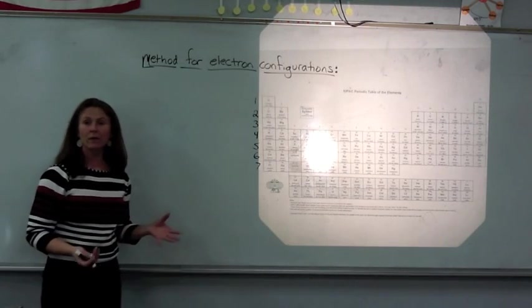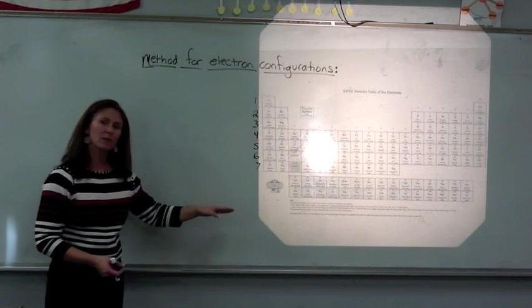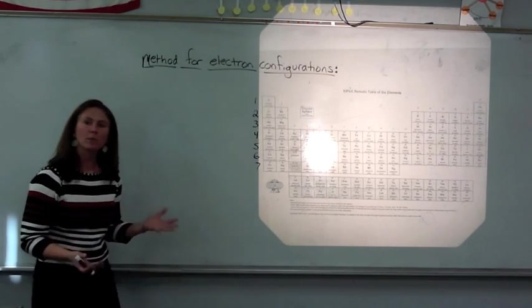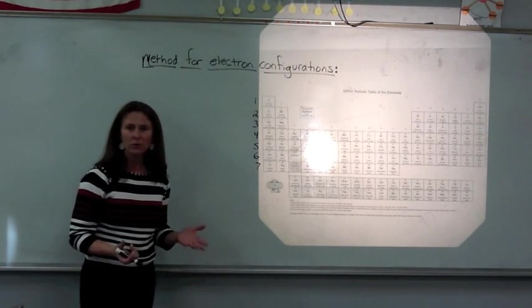One of the methods that we use to write electron configurations is to learn to read the periodic chart from left to right. And in this way you won't have to memorize what orbitals fill prior to other orbitals in terms of how much energy they have.